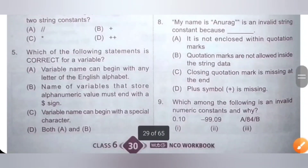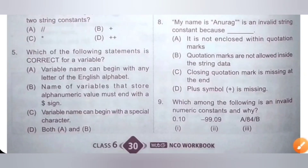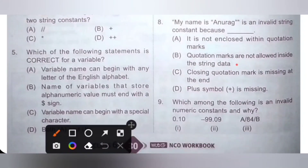Eighth question: "my name is Anurag" is an invalid string constant because — A) it is not enclosed within quotation marks, B) quotation marks are not allowed inside the string data, C) closing quotation mark is missing at the end, D) plus symbol is missing. The correct option is B. The valid statement uses opening and closing double quotation marks with no quotation marks inside the string data.